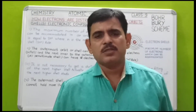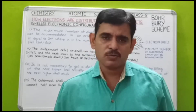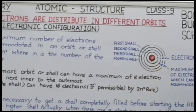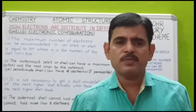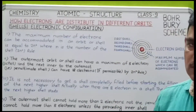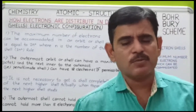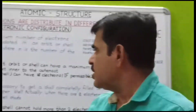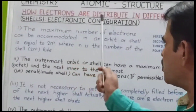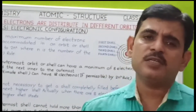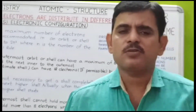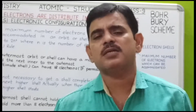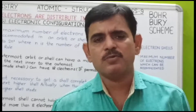Atom में shells और sub-shells भी होते हैं। यह scheme किसने लागू किया था, उसे हम समझते हैं — how electrons are distributed in different orbits. एक संकल्पना की गई थी जिसे Bohr ने start दिया था। Bohr एक scientist थे, इन्होंने electronic configuration की scheme दी थी जिसमें किसी भी electron का किसी class में किस तरह distribution होता है, वह हम आज बताएंगे।